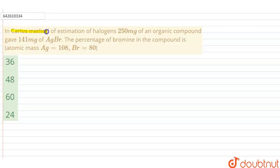In Carius method of estimation of halogens, 250 milligrams of an organic compound gave 141 milligrams of AgBr. The percentage of bromine in the compound is? We have been given the atomic mass of silver, that's Ag = 108, and bromine, that's 80.